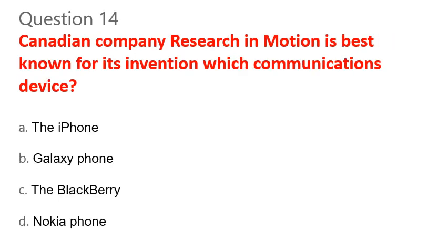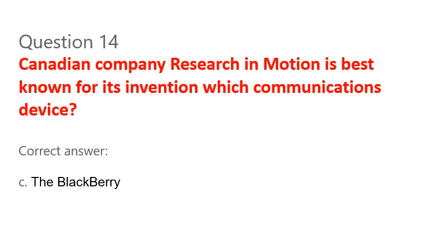Question 14. Canadian company Research In Motion is best known for inventing which communications device? A. The iPhone. B. Galaxy phone. C. The Blackberry. D. Nokia phone. Correct answer: C. The Blackberry.